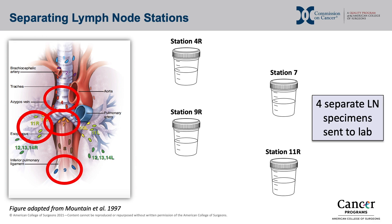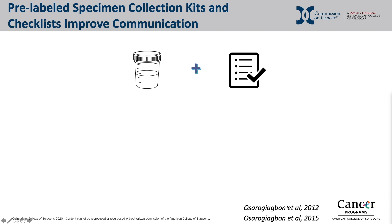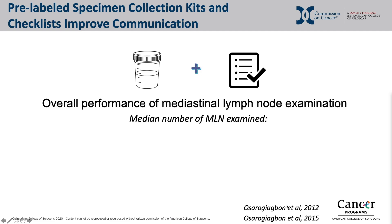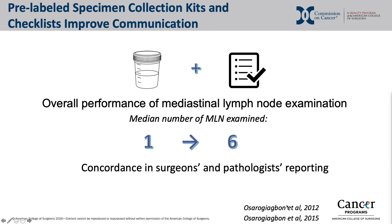Four separate lymph node specimens are sent to the lab clearly labeled for the pathologist. This can be accomplished by dissecting each lymph node station separately, or by resecting everything en bloc and separating the stations on the back table. Studies on pre-labeled specimen collection kits and checklists showed the median number of mediastinal lymph nodes examined increased from one to six, and concordance in surgeons' and pathologists' reporting of lymph node stations improved from 39% to 80%.